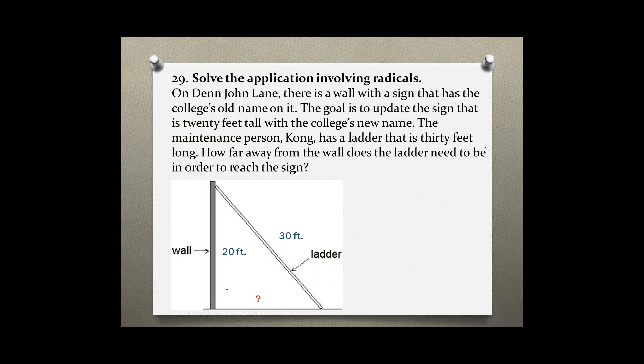Because this is a right triangle with a 90 degree angle right here we can use the Pythagorean theorem which states c squared equals a squared plus b squared. So c squared is always the hypotenuse which is across the 90 degree angle right here. This is c squared.